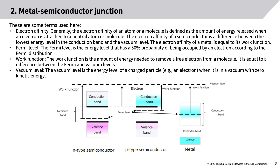Electron affinity: Generally, the electron affinity of an atom or molecule is defined as the amount of energy released when an electron is attached to a neutral atom or molecule. The electron affinity of a semiconductor is the difference between the lowest energy level in the conduction band and the vacuum level. The electron affinity of a metal is equal to its work function. Fermi level: The Fermi level is the energy level that has a 50% probability of being occupied by an electron according to the Fermi distribution. Work function: The work function is the amount of energy needed to remove a free electron from a molecule.